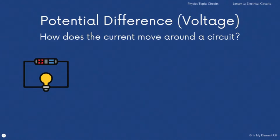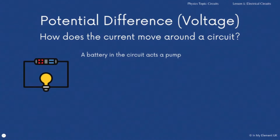Not only is the current important, but also the potential difference. You might use the words interchangeably — potential difference or voltage — we are going to use both. If we are talking about potential difference, you can also refer to that as voltage. What you do need to remember is that the potential difference is measured in volts, and that's when it becomes really handy to remember that potential difference is voltage. To understand how current moves around a circuit, think of the battery — represented with the positive and negative terminals — as acting like a pump.